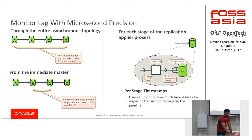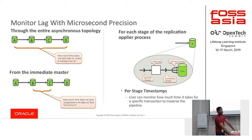There is fine-grained control for receiver thread, coordinator thread, and worker threads. We get all this information from Performance Schema tables.